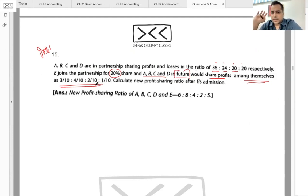E ko de do 20 percent, baaki jo bach jayega A, B, C, D aapas mein 3:4:2:1 ke ratio mein.